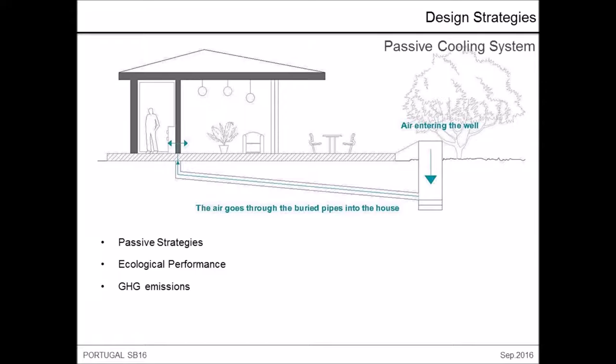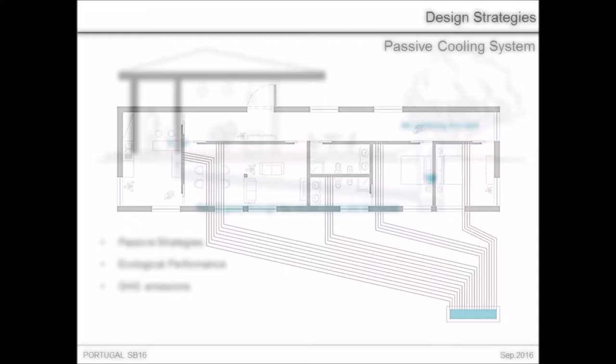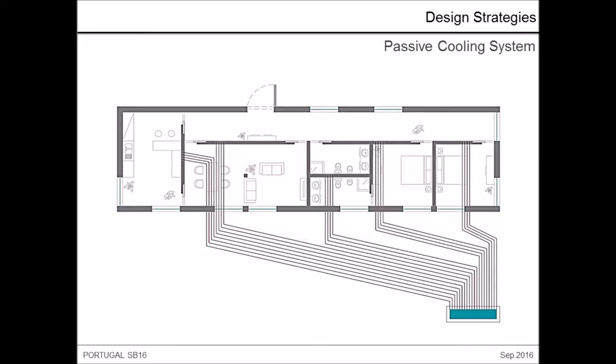The next steps to consider are the design strategies concerning passive systems. The natural ventilation strategy relies on two different approaches: natural ventilation achieved by the windows, allowing the natural movement of the wind, and a passive cooling system using buried pipes.